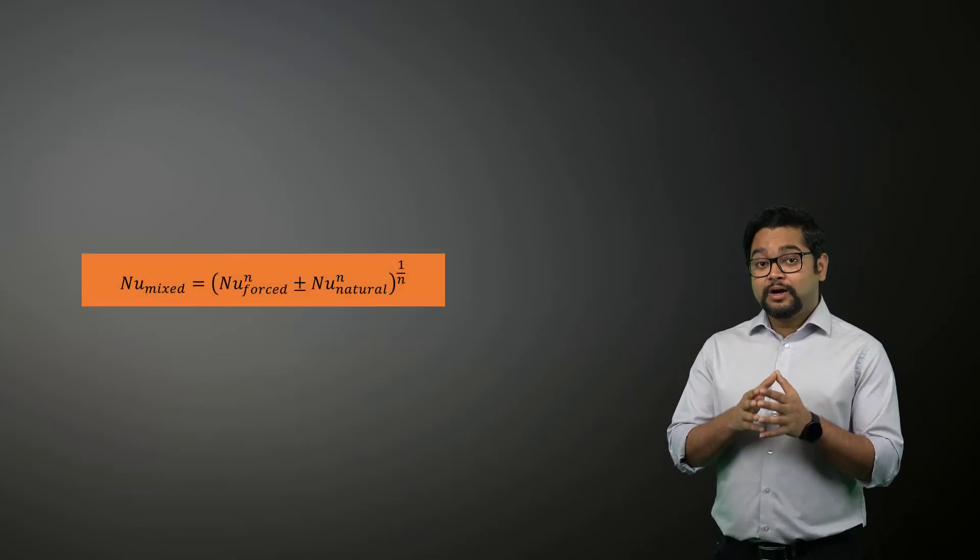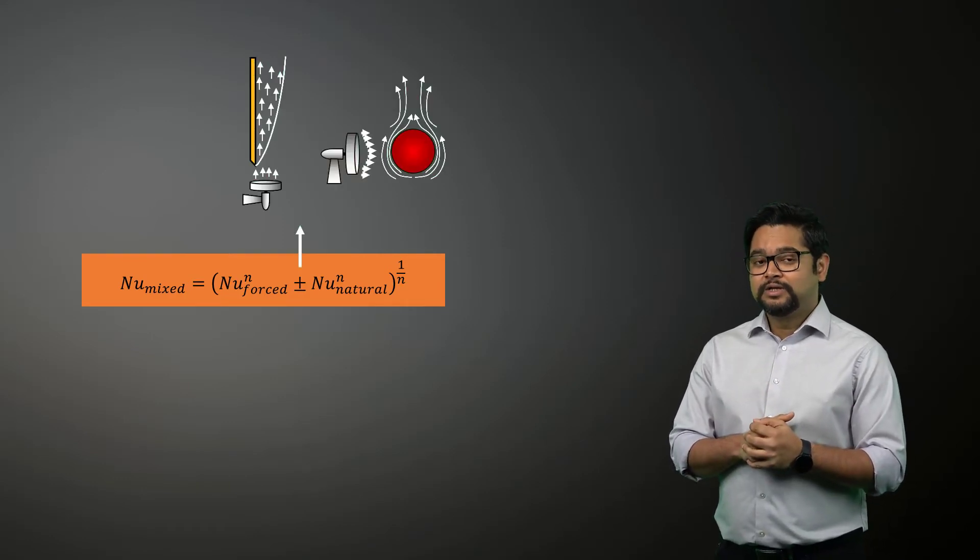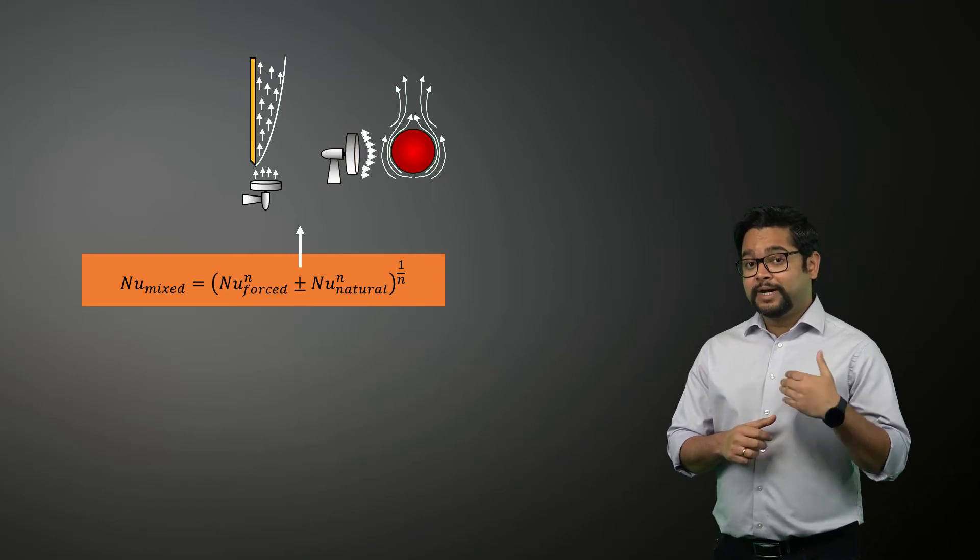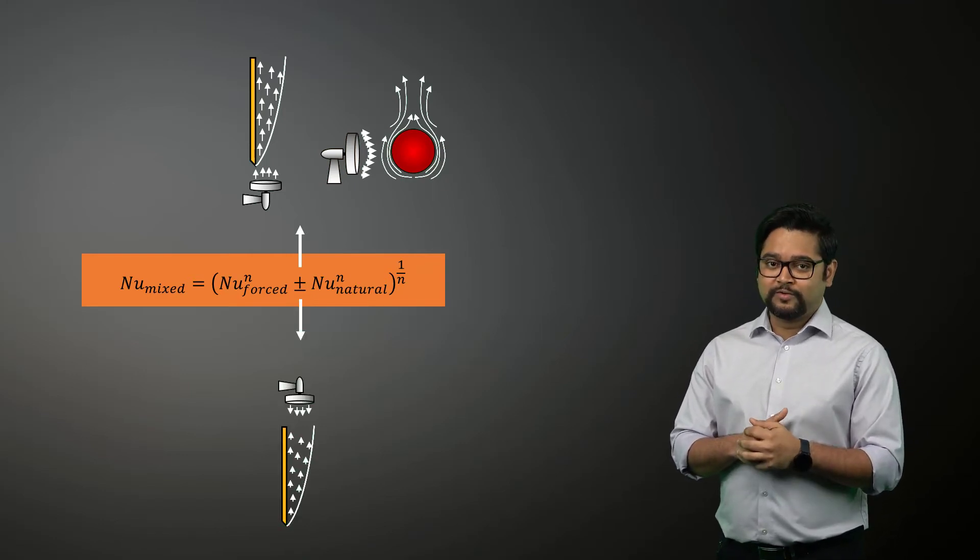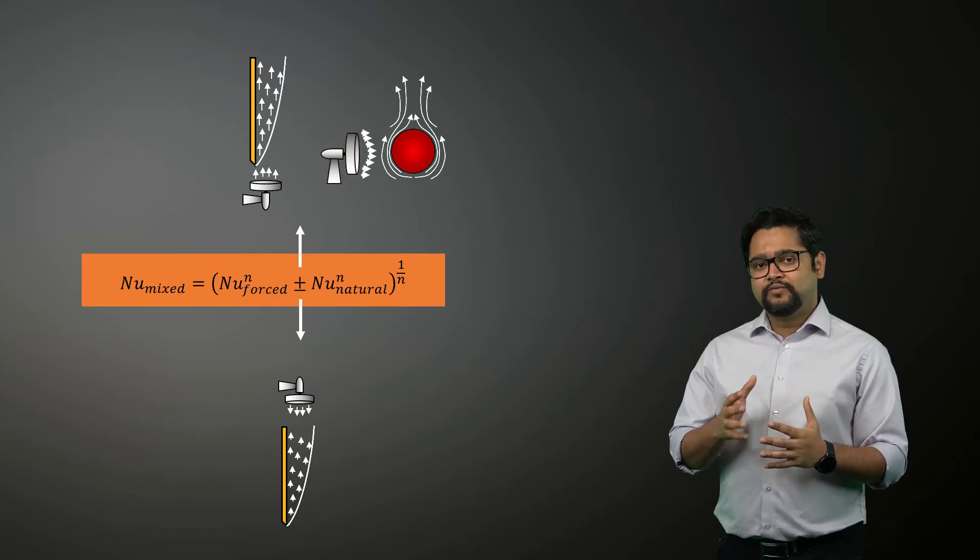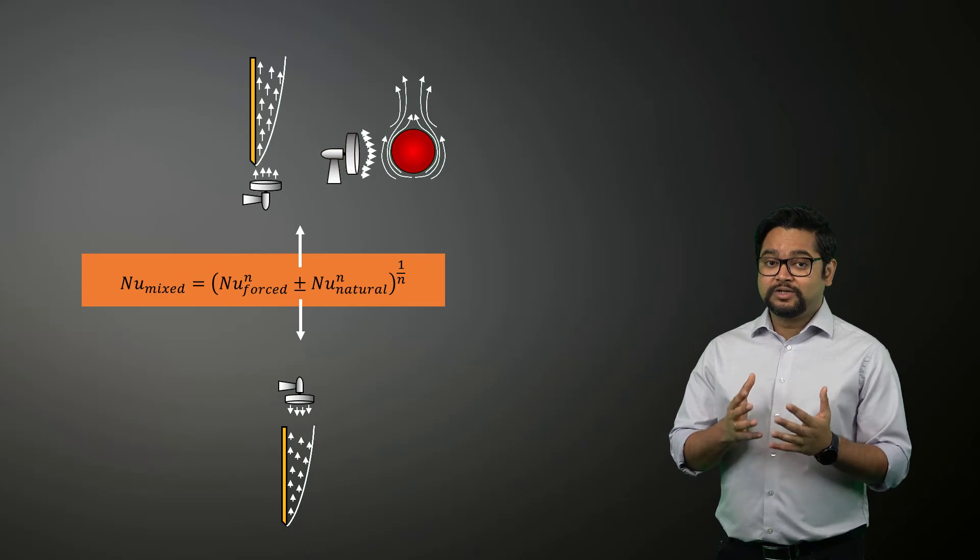Here Nu forced and Nu natural are determined from existing correlations of pure forced and natural convection. The plus sign on the right-hand side of the equation is for assisting and transverse flows, whereas the minus sign applies to opposing flows. The value of the exponent N varies between 3 and 4 depending on the geometry involved.